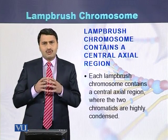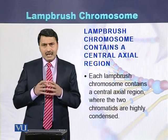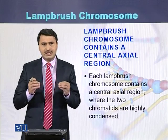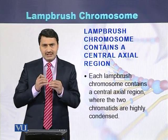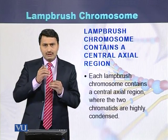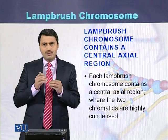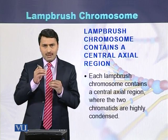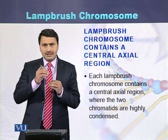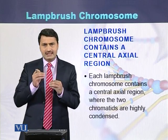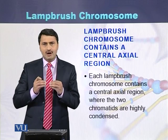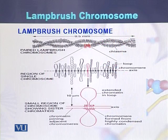The lamp brush chromosome contains a central axial region, within which loops are formed. Those loops are made up of chromatids. One loop is on one side of the central axial region while the second loop is on the other side of the central axial region.